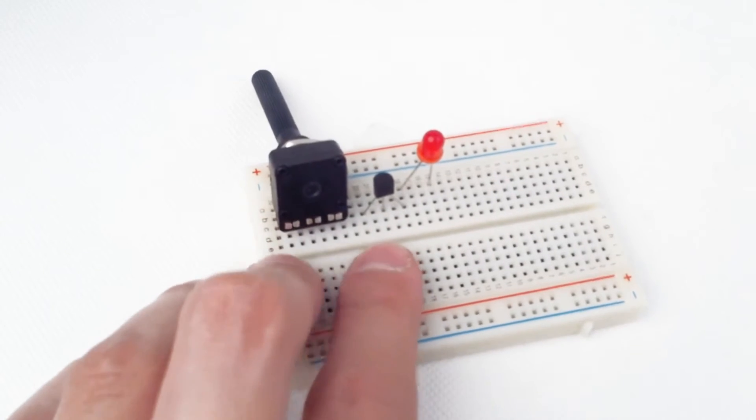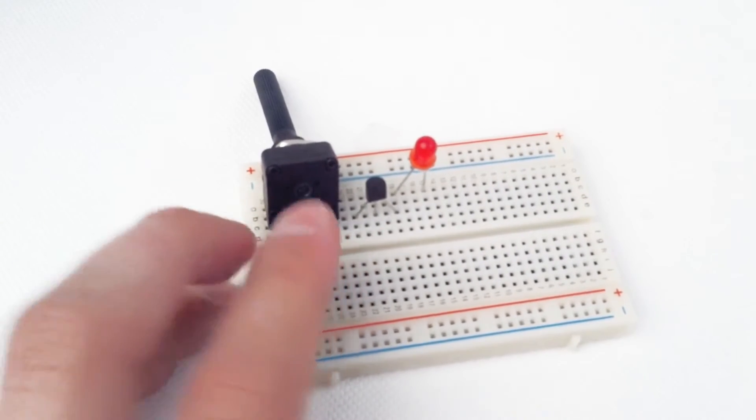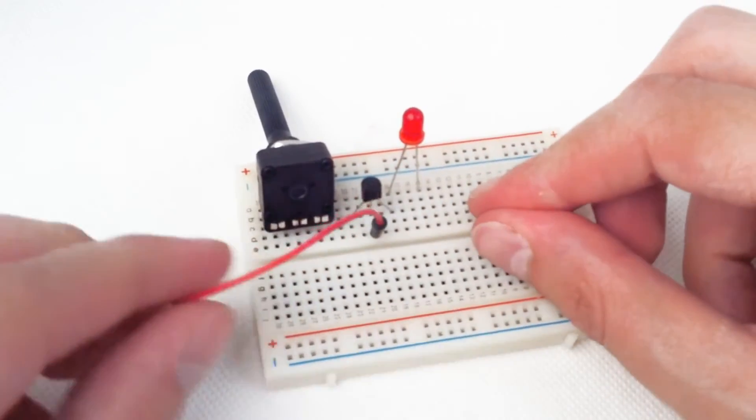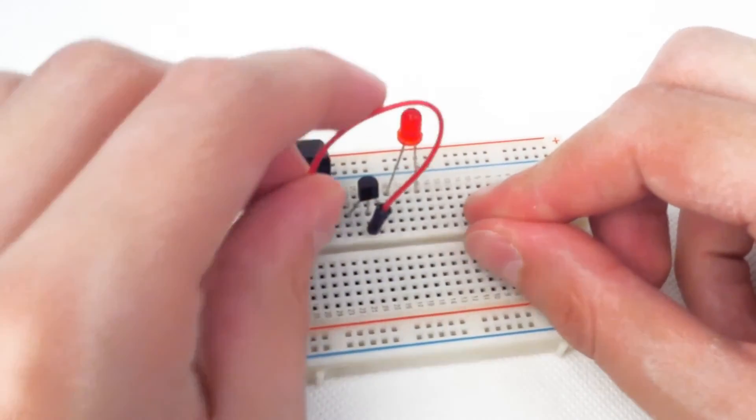Now this is the tricky part - we're going to connect our transistor to the variable resistor. So we connect the middle leg, middle terminal.